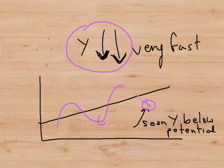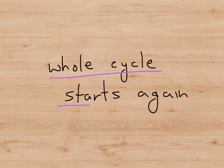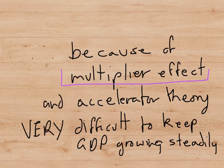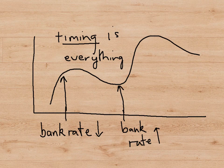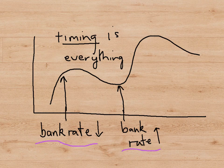So we have gone full circle. We started at a point below potential, we rose very quickly above potential, and now we are below potential again. In other words, we have completed one full economic cycle. What this shows is that the whole cycle will now start again. But it also illustrates that because of the multiplier effect and the accelerator effect working together, it is very difficult to keep the GDP of a country growing steadily. The GDP tends to go up and down in a cycle. And despite all the efforts of the central bank to either move the bank rate down or move it up, the timing is never quite exactly accurate. The central bank cannot time the changes of the interest rate precisely to make the economy grow steadily. The multiplier effect plus the accelerator effect is very explosive.